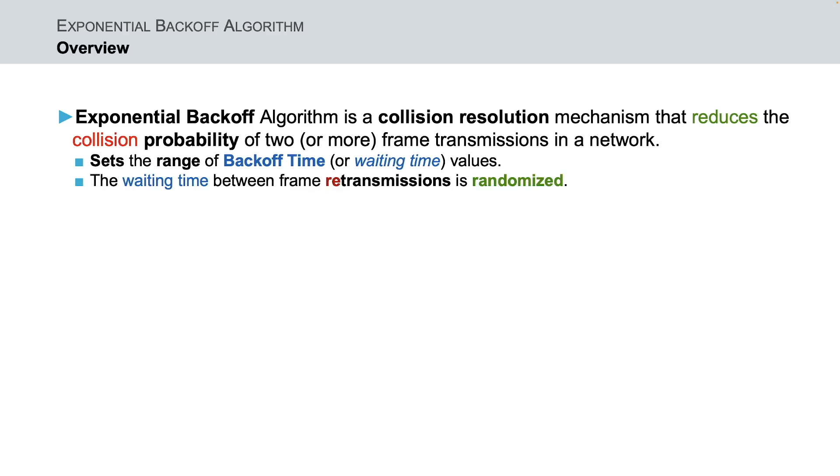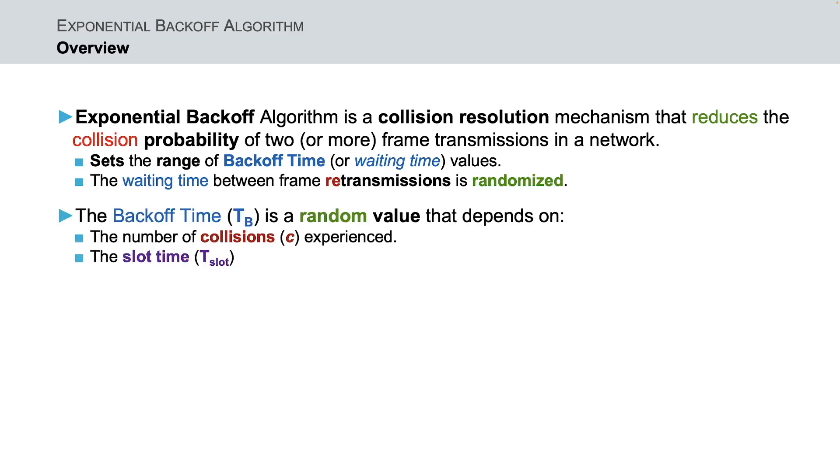The exponential backoff algorithm randomizes this waiting backoff time between the frame retransmissions. Thus, the backoff time is a random value that depends on the number of collisions experienced and on a slot time, where the slot time can be expressed, for example, as the maximum propagation time or frame transmission time, and it is implementation dependent.